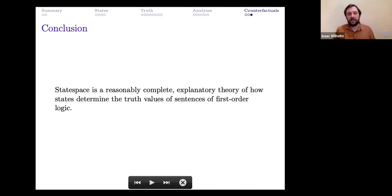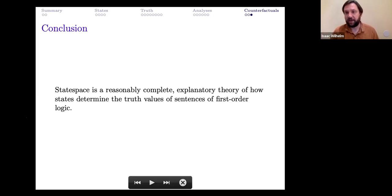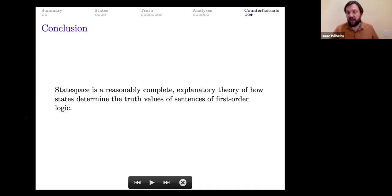To wrap up: state space is a theory of how states of the world make some sentences true and other sentences false in an explanatory sense of 'make.' It is a complete theory for first-order logic and extends to cover counterfactual connectives. It is explanatory both because it covers counterfactuals, which are often taken to be explanatory, and because the relations of verification and falsification are themselves explanatory relations. The theory bears a lot of fruit — there is much that can be analyzed in a successful, intuitive, and satisfying way using this approach to states and truth. Thank you very much for listening.